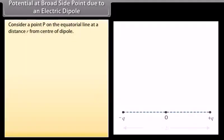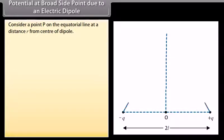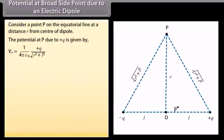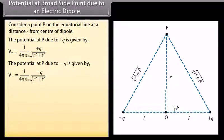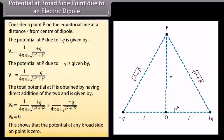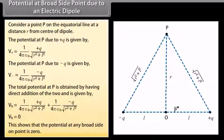Potential at broadside point due to an electric dipole: Consider a point P on the equatorial line at a distance R from the center of the dipole. The potential due to plus Q is V_positive equals 1 upon 4π ε₀ multiplied by Q upon √(R² + L²), and due to minus Q is V_negative equals 1 upon 4π ε₀ multiplied by minus Q upon √(R² + L²). The total potential V_B equals zero, showing that the potential at any broadside-on point is zero.